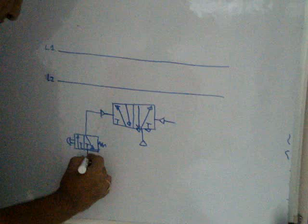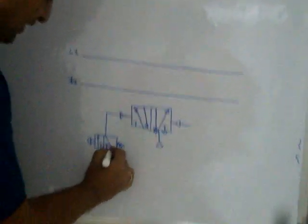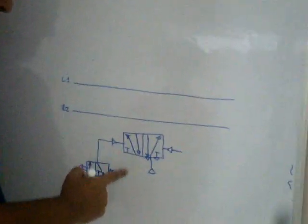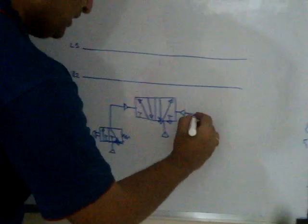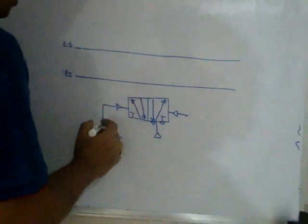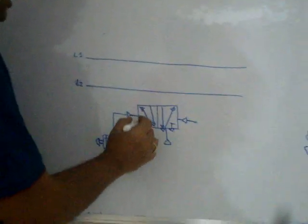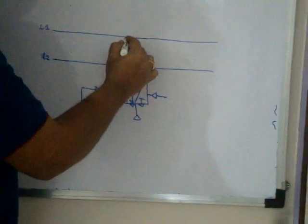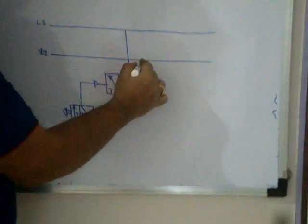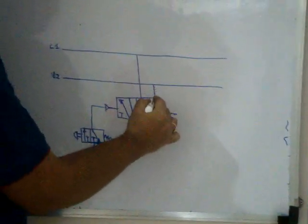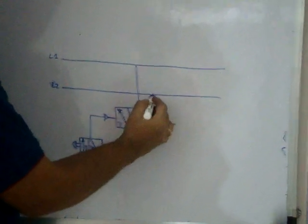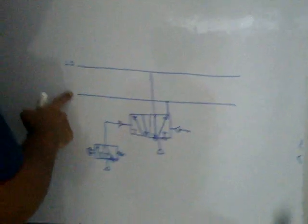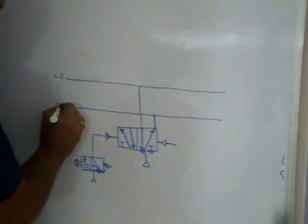I am showing different compressors here, but the actual compressor is only one. If I operate this, the compressor supply goes to this line. Presently L2 is on and L1 is off.